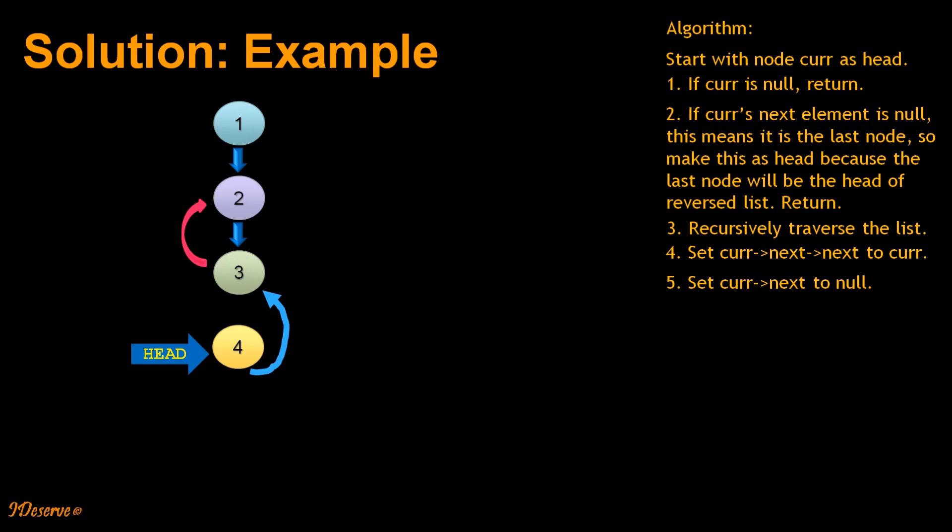After this, we return to our previous call stack. Here again, current is pointing to node 2. We set current.next.next to current, and we set current.next to null. Again, we reverse the node pointers.